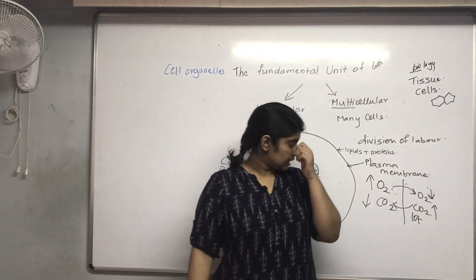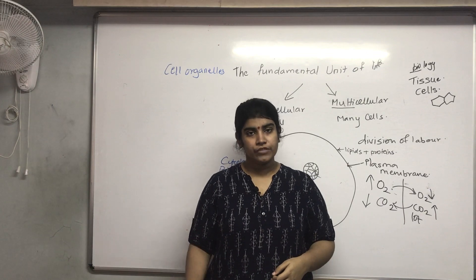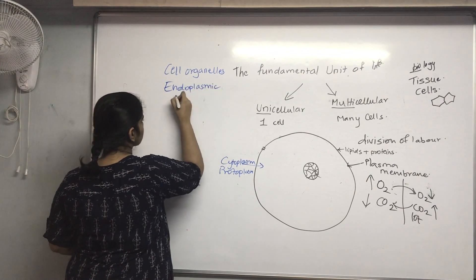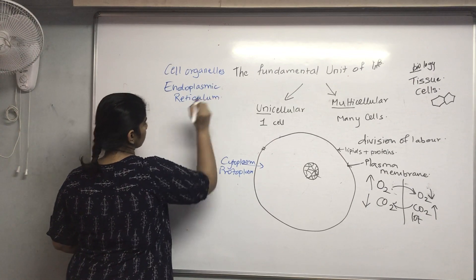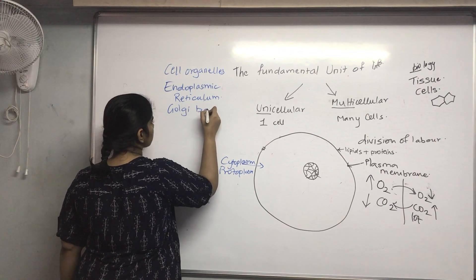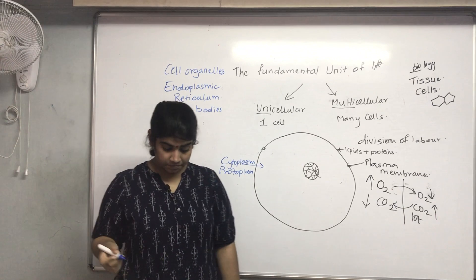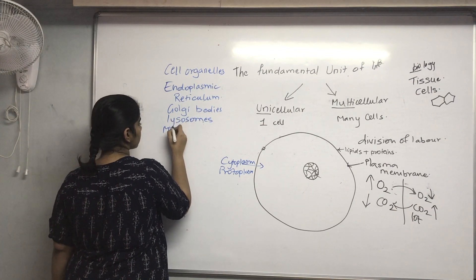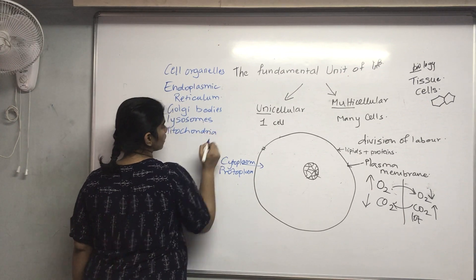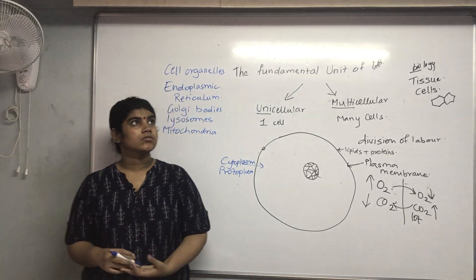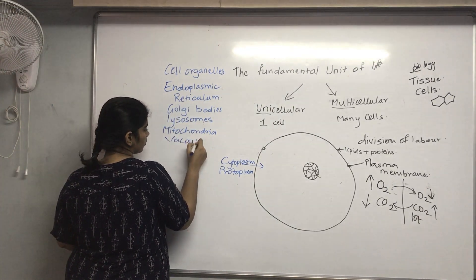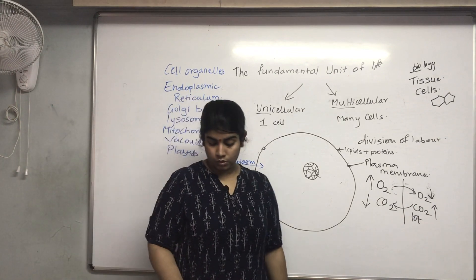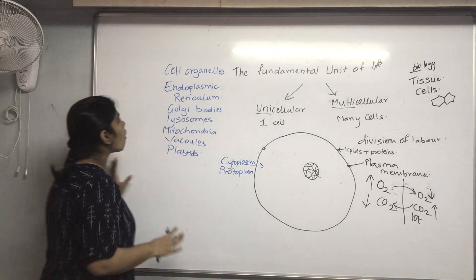Beyond the cell membrane, nuclear membrane, nucleus, cytoplasm, and cell wall, there are structures known as cell organelles. These include the endoplasmic reticulum, Golgi body or Golgi apparatus, lysosomes, mitochondria, vacuoles, and plastids, among others.